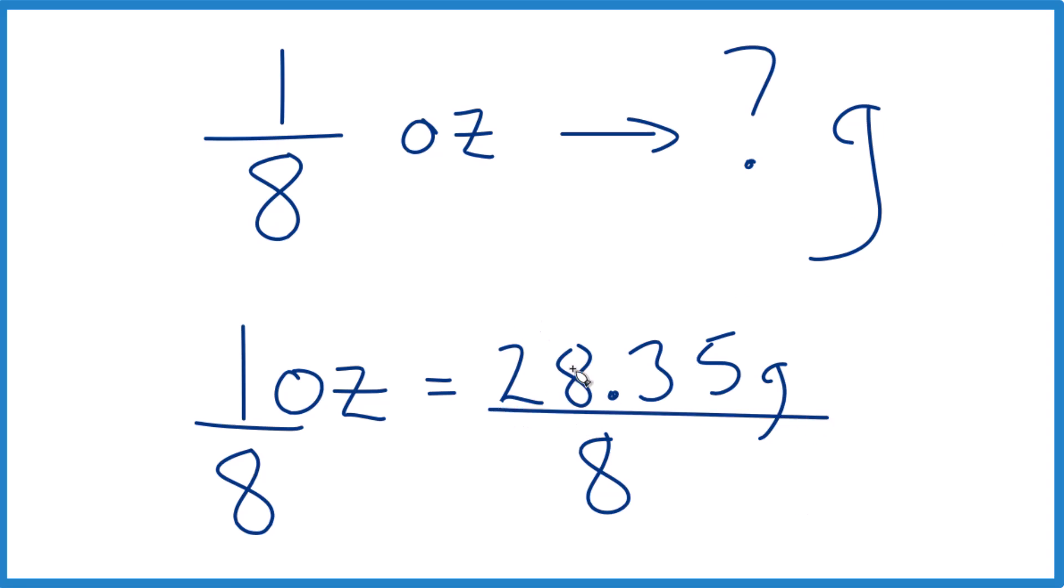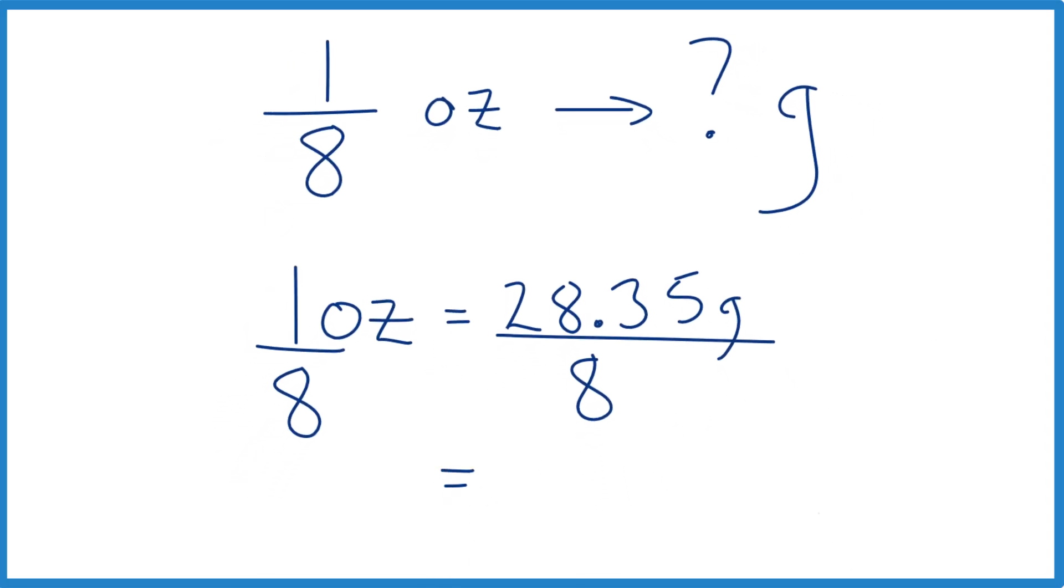Math, right? So we're just going to take 28.35 divided by eight, and we end up with 3.5437, but let's just call that 3.54.